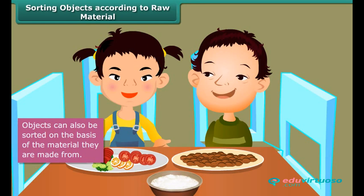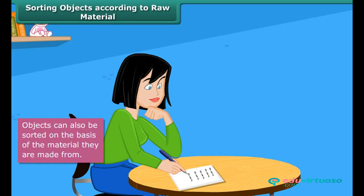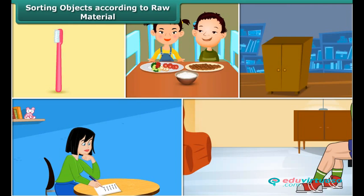The plate you have your breakfast in is made of melamine or stainless steel. The cupboard you keep your books or clothes in is made of iron or wood. The books that you read are made of paper. The shoes you wear are made of leather, canvas, or rexin. Thus, all objects we use in our day-to-day life can be classified on the basis of the raw materials used in making them.